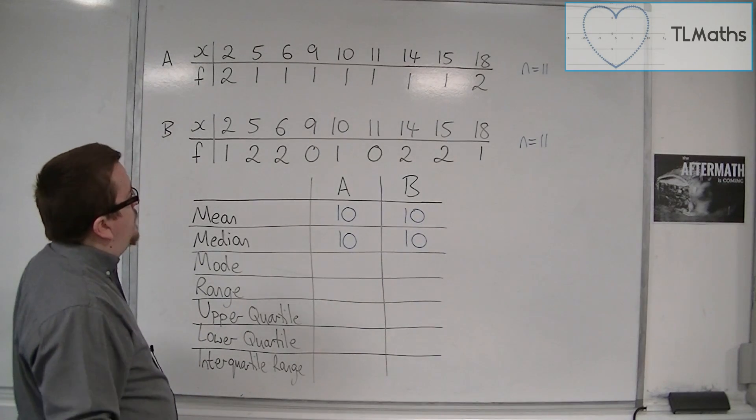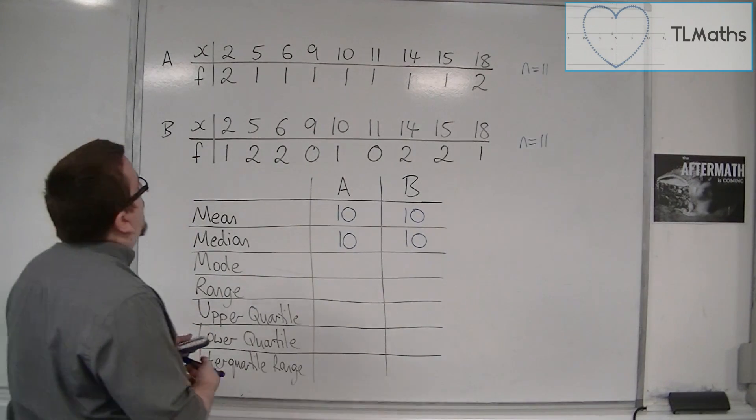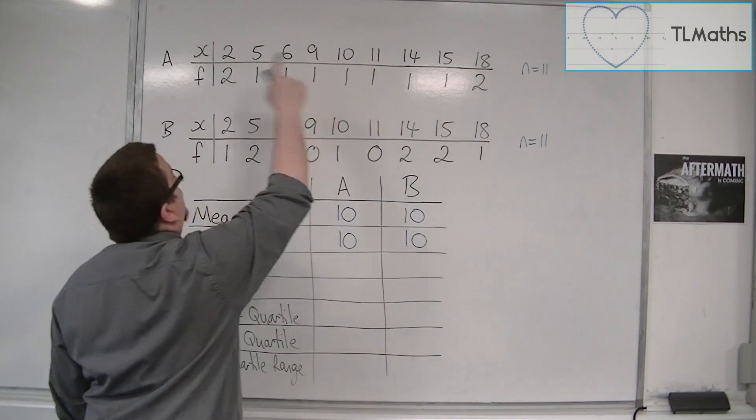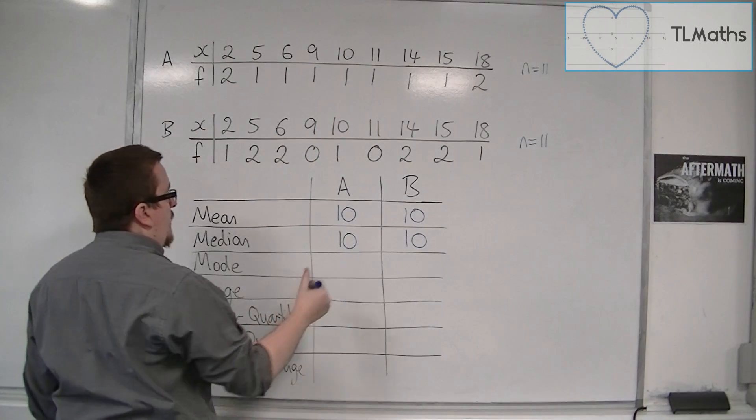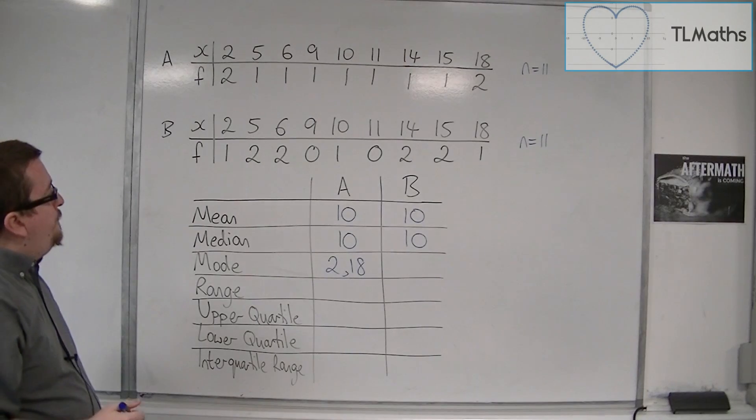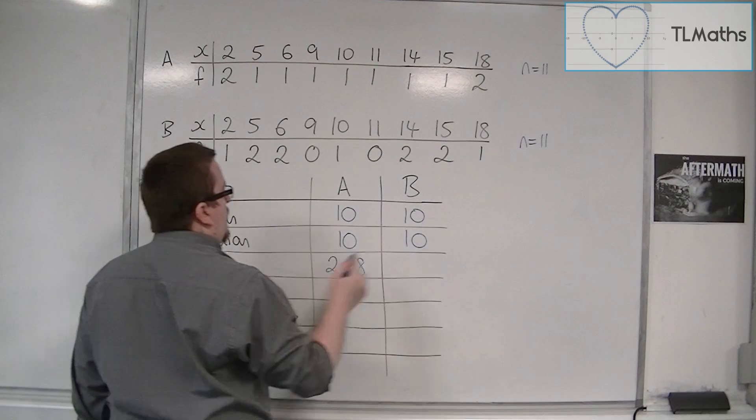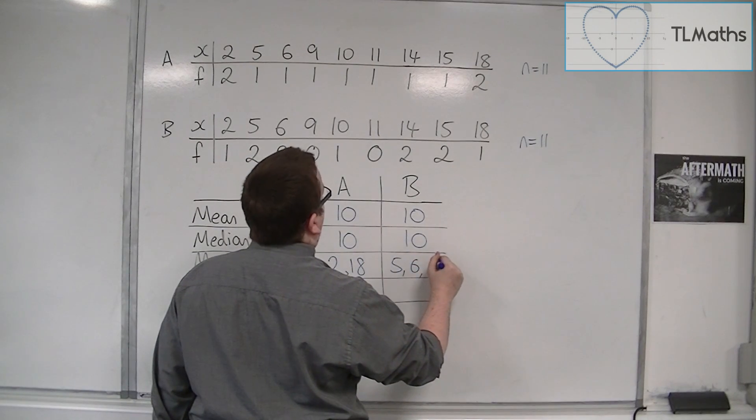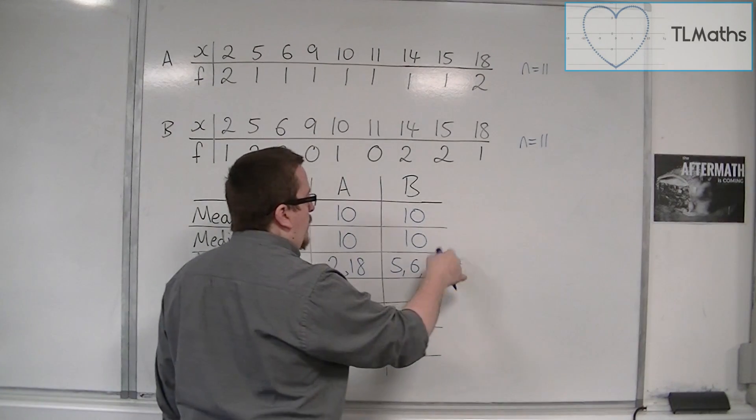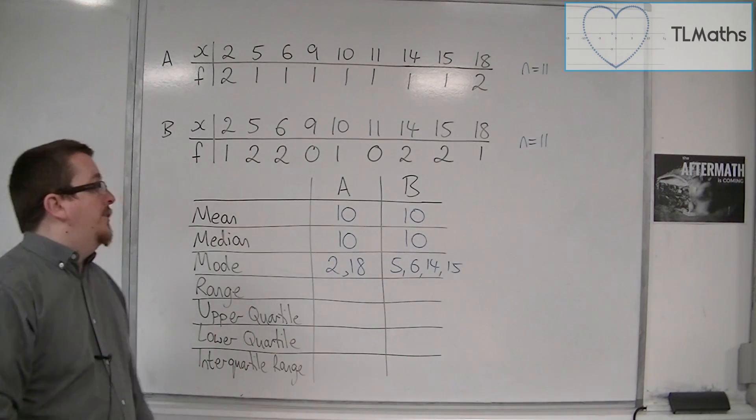So how about the mode? Well, the mode is the most common value to appear. And what we have is that the mode for set A, well, there's two of them. There's 2 and 18. The 2 and the 18 came up twice. So set A has two modes. Set B has four numbers that appeared twice: 5, 6, 14, and 15. So as you can see just from this example, the mode in this case isn't going to be really very useful as a comparison.